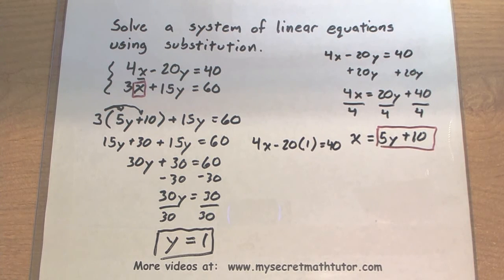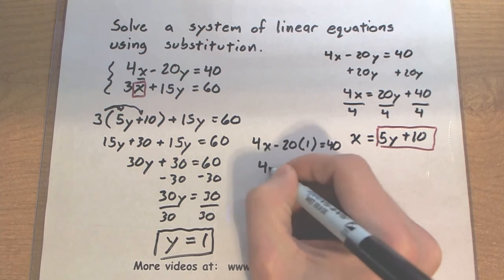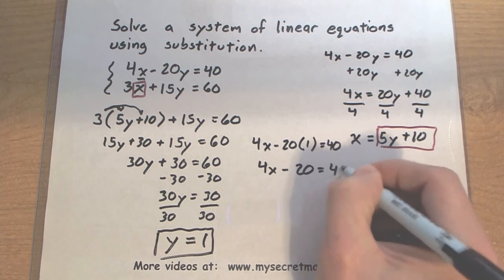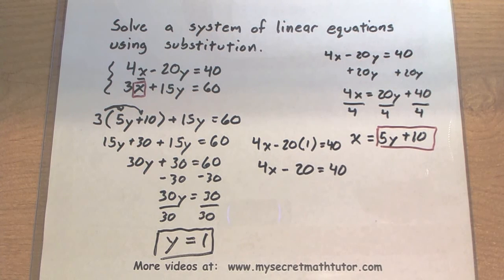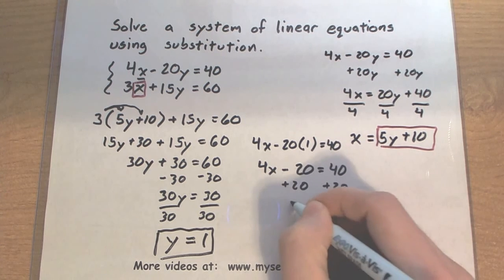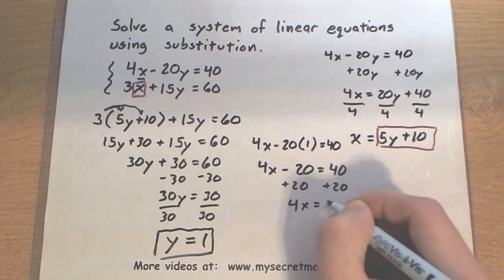I went and put it into the first equation. Let's go ahead and solve this for x. Minus 20 times 1, minus 20. Add 20 to both sides. So 4x is equal to 60.